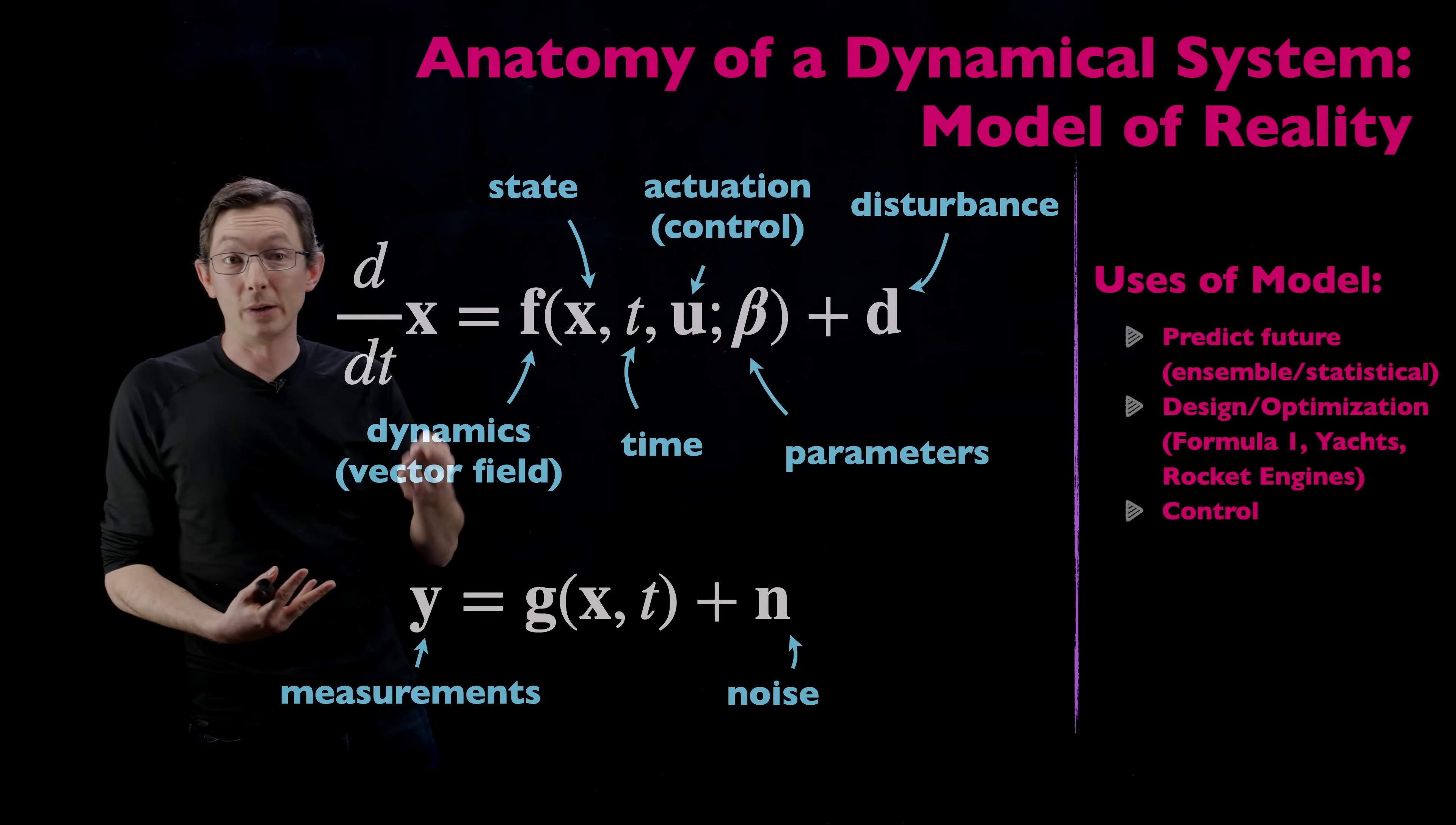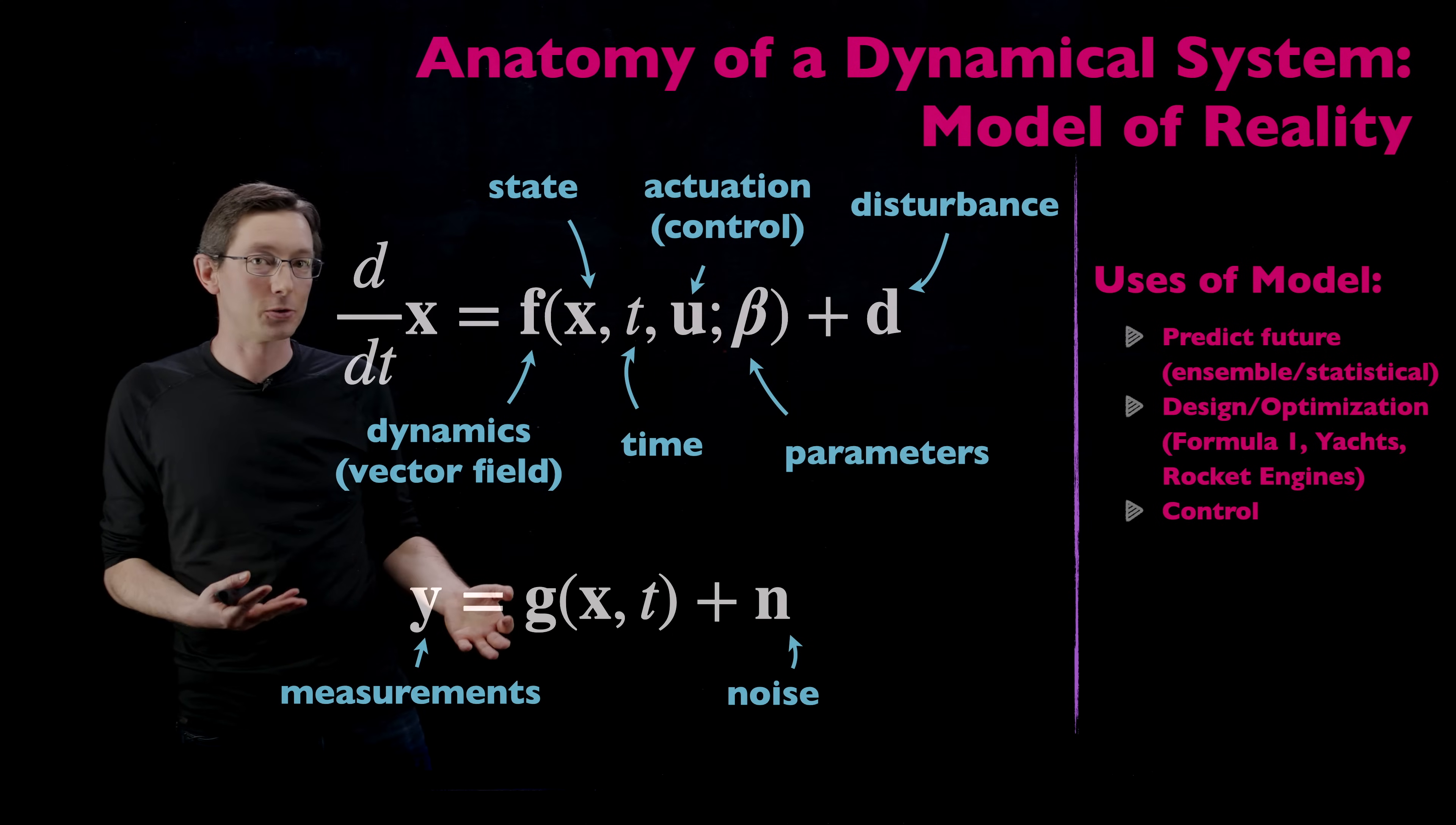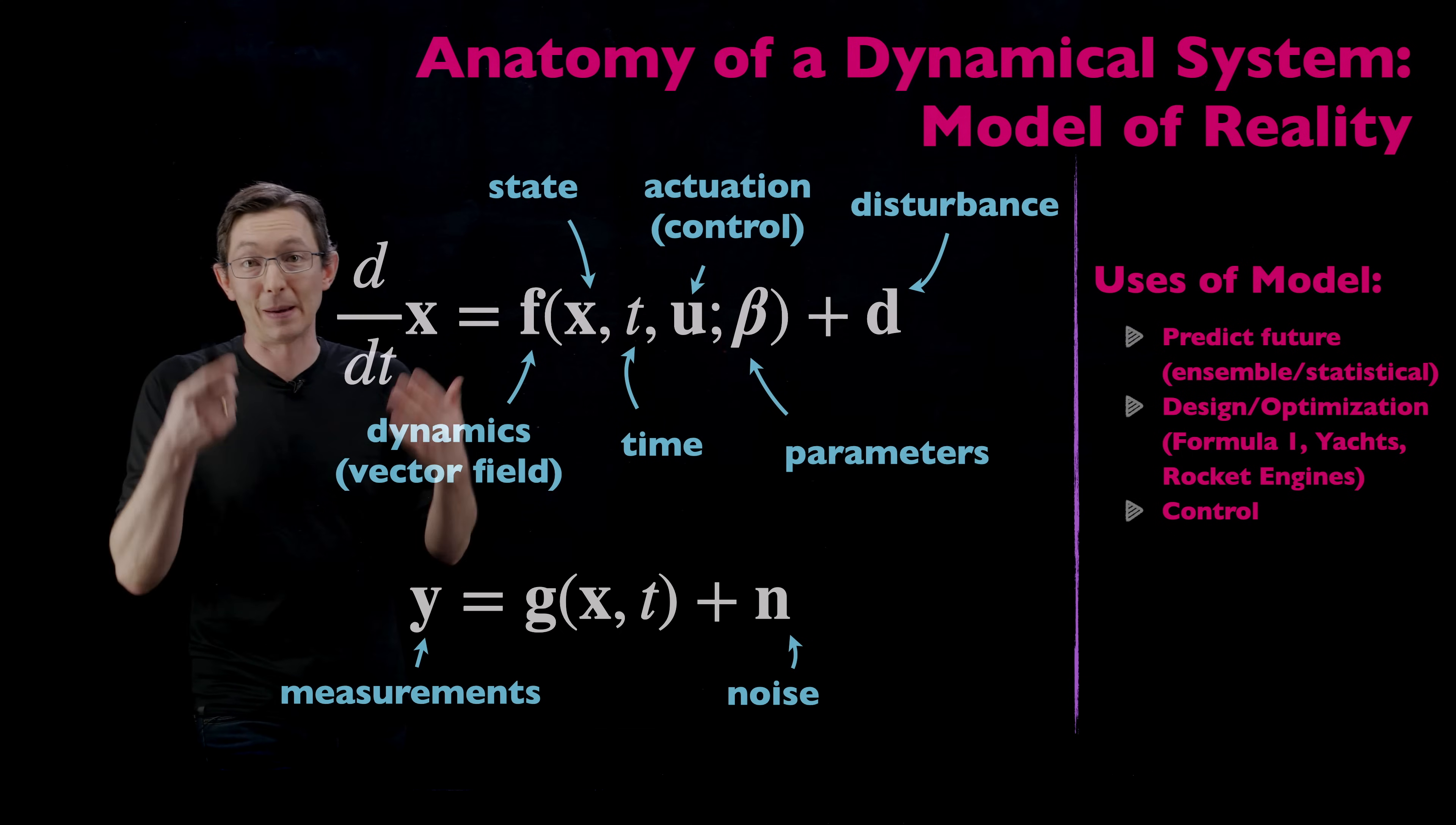Now if you do that optimization in real time based on your measurements that would be called feedback control. If you can actively manipulate some part of your system in real time those parameters become actuators and this becomes a feedback control problem. And that would be really satisfying and incredibly useful in many systems if we could actively control them to some engineering specifications.